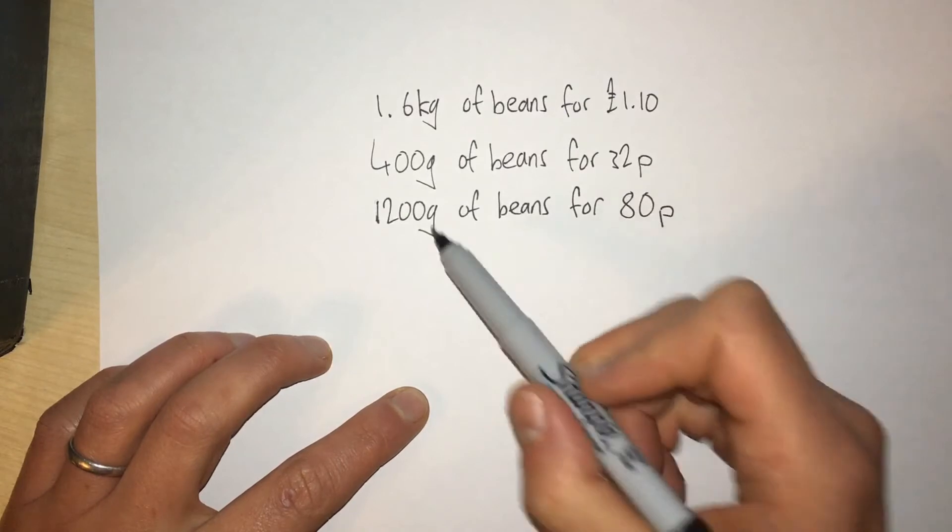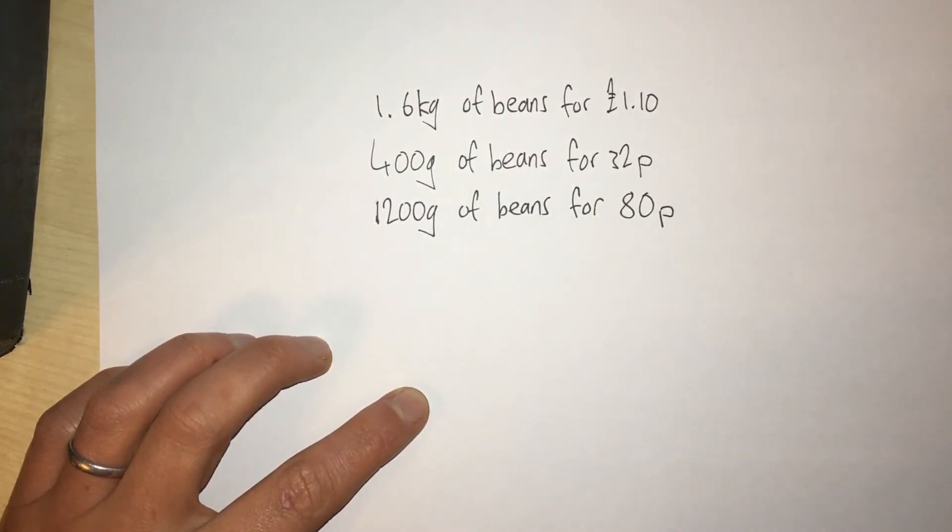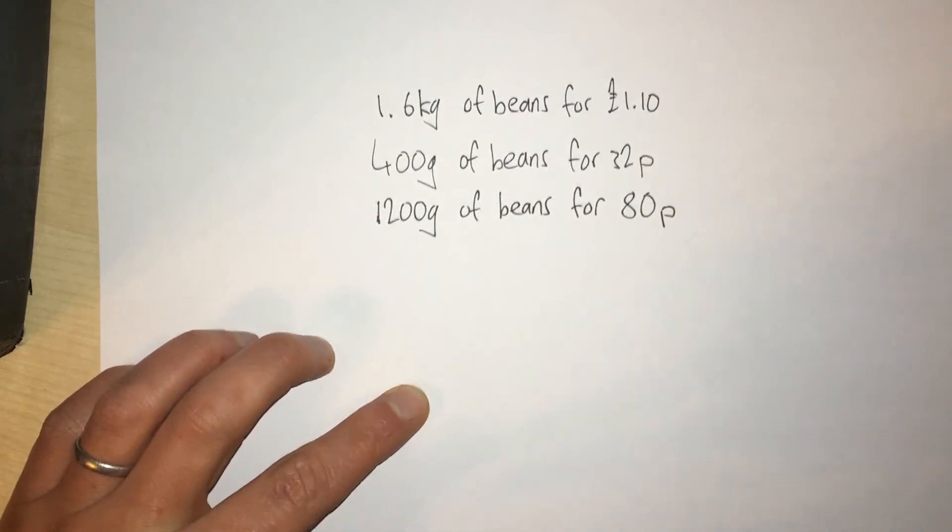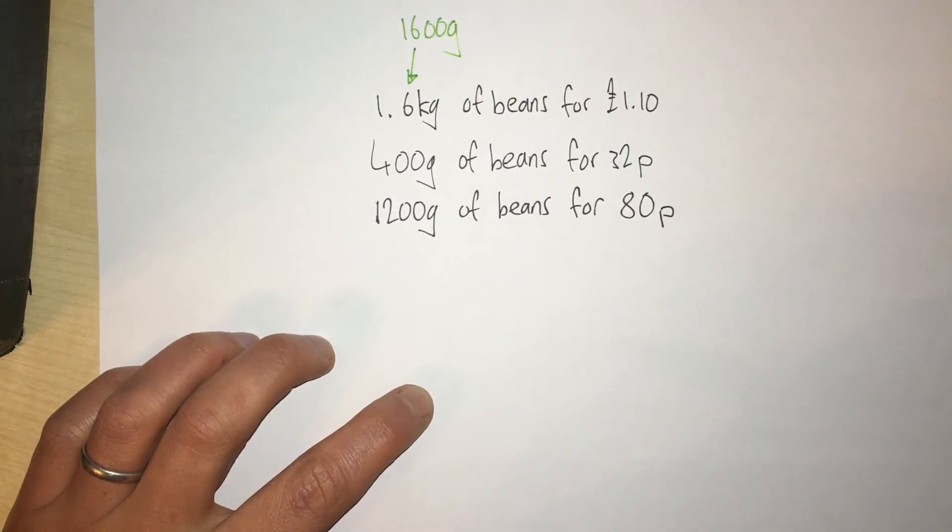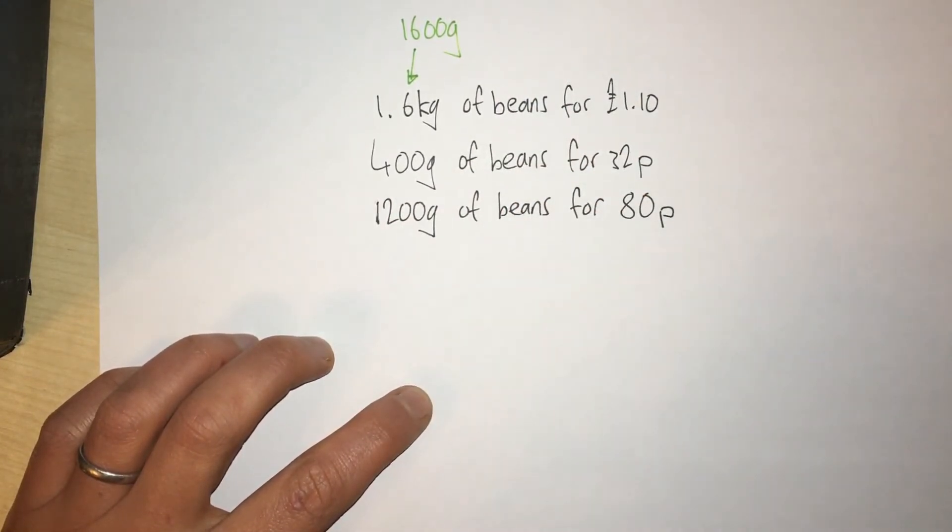Now I've noticed that 400 goes into 1200, and 1.6 kilograms - well that's the same as 1600 grams - and 400 goes into that too. So let's change each of these to 400 grams.